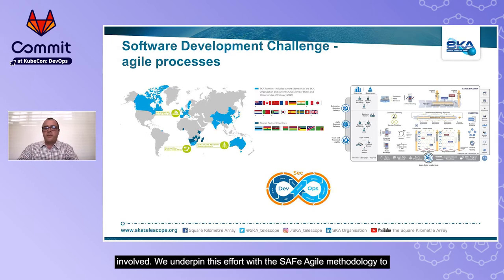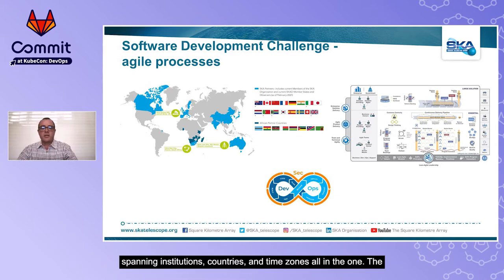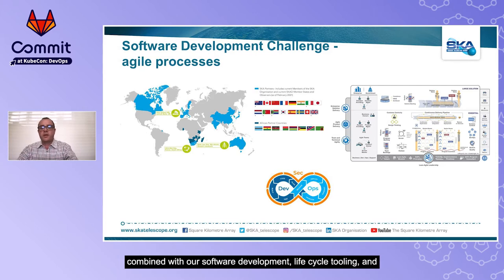We underpin this effort with the SAFe Agile methodology to guide the development stream and back this up with management of platform and tooling through DevSecOps principles. Presently, we have 19 SAFe Agile teams with 150-odd participants, with most teams spanning institutions, countries and time zones all in one. The management of this has been challenging, but the agile approach combined with our software development lifecycle tooling and processes have been pivotal in our success to date.